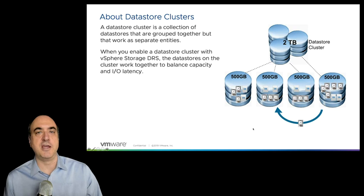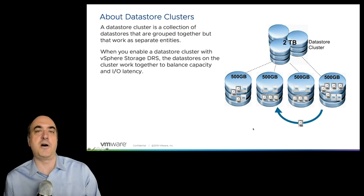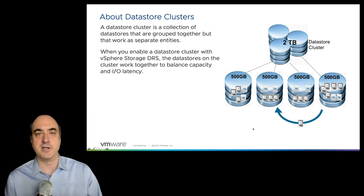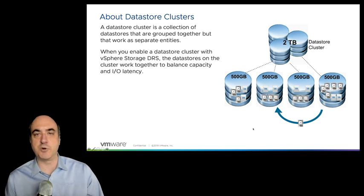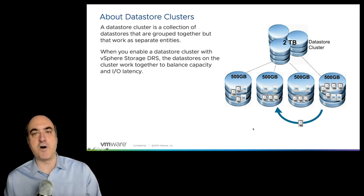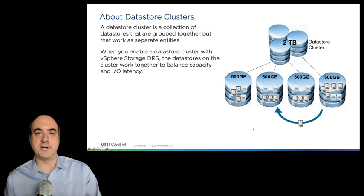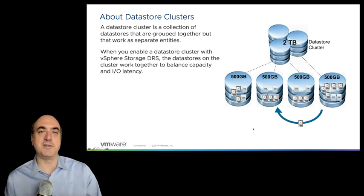The goal is to create an environment that is far more automated when you have traditional storage like VMFS and NFS, so administrators don't have to track which data stores are more full than others, or which are being outperformed. When you build a data store cluster, you should have a collection of data stores — up to 64 — all grouped together to represent a common storage IO characteristic.